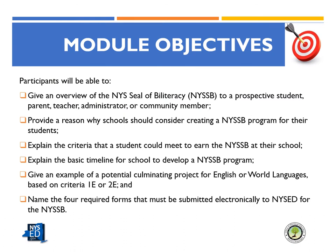Let's start with the Module Objectives. By the end of this module, participants will be able to: give an overview about what the Seal of Biliteracy is to a prospective student, parent, teacher, administrator, or community member; provide a reason why schools should consider creating a Seal of Biliteracy program; explain at least two of the criteria that a student could meet to earn the seal; explain the basic timeline for schools to develop a seal program; give an example of a potential culminating project for world languages or English based on criteria 1E or 2E; and name two of the four required forms that must be submitted electronically to the Office of Bilingual Education and World Languages.